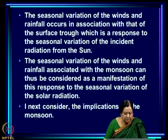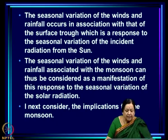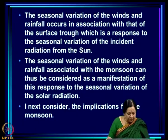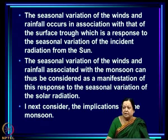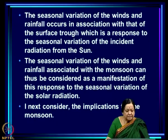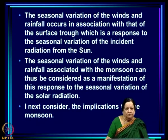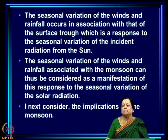In association with the seasonal variation of the trough there will be seasonal variation in the direction of winds. The seasonal variation of winds and rainfall associated with the monsoon can thus be considered as a manifestation of this response to the seasonal variation of solar radiation.